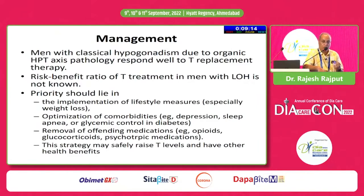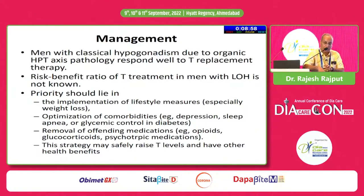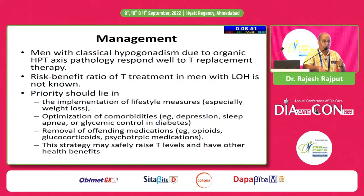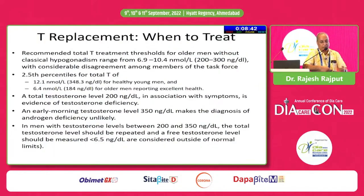How to manage? First, rule out classical hypogonadism. If you are suspecting late onset hypogonadism, preference should be given to lifestyle modification — change in body weight, control of comorbid conditions like diabetes and hypothyroidism, and look for drugs responsible for causing secondary hypogonadism or changes in libido. We often don't ask thoroughly, but patients may be taking lots of unnecessary medications.